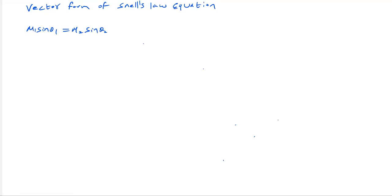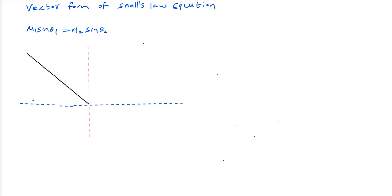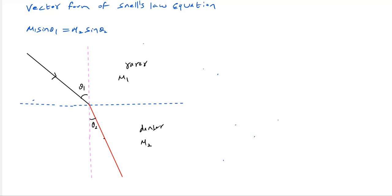So we'll make some assumptions. Let this be the normal, and let me choose this as the boundary. Let the incident ray make angle of incidence θ₁. Let this be the rarer medium with refractive index μ₁, and let this be the denser medium with refractive index μ₂. Angle of incidence is θ₁ and angle of refraction is θ₂.